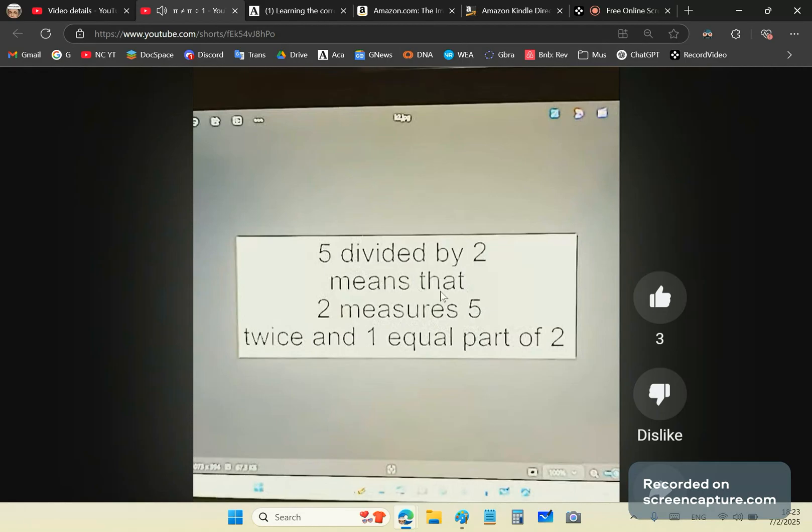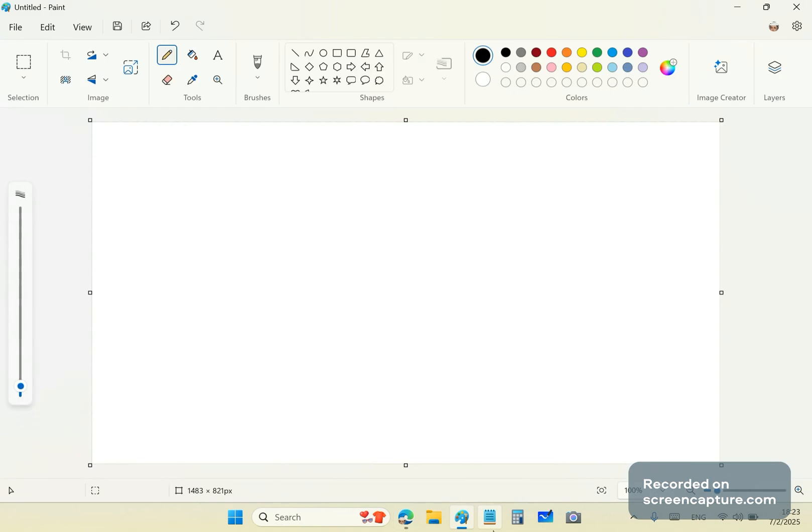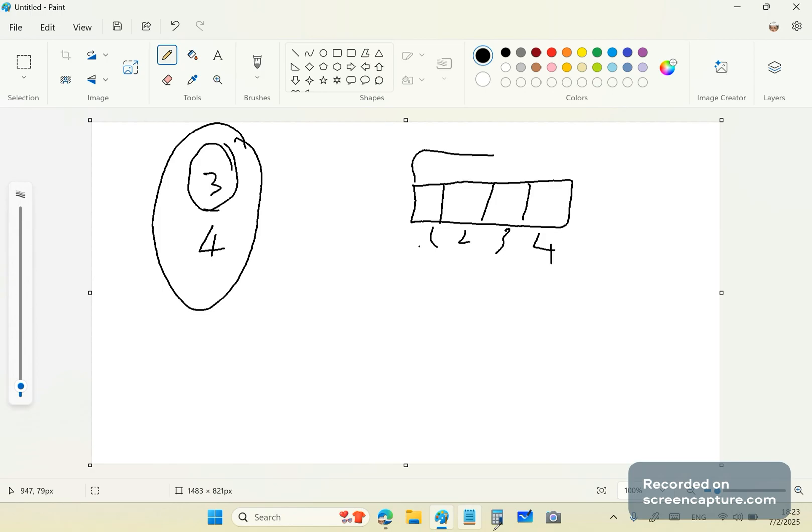Five divided by two means that two measures five two times and one equal part of two. In other words, a half of two. You see, when you write something like three quarters, it means that your unit consists of four equal parts. One, two, three, four. And this here enumerates the number that it represents, that this fraction represents. It represents three of those parts.